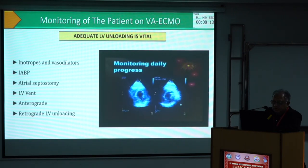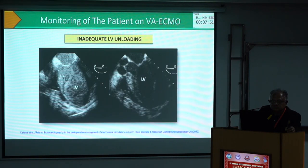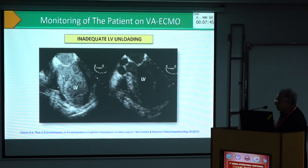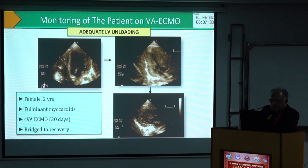If ventricular unloading is inadequate, you will have to do something to correct that, and there are different procedures for that. You can see quite gross stasis in the left ventricle and left atrium — inadequate unloading of the left ventricle. By contrast, here you can see nicely emptying, the two ventricular walls are kissing each other — this is adequate emptying and unloading of the ventricle. This was a 20-year-old female with myocarditis on central VA ECMO for 30 days as a bridge to recovery.